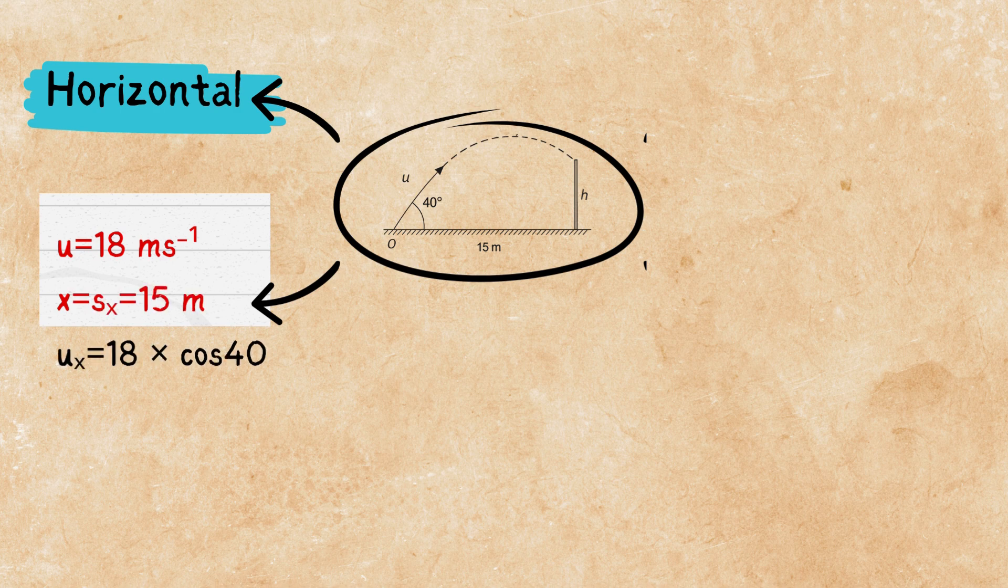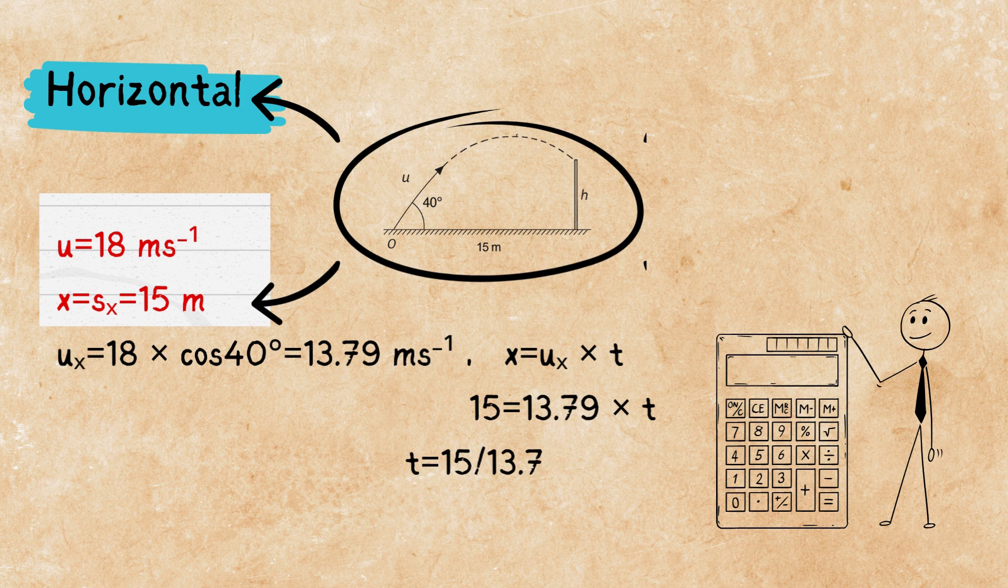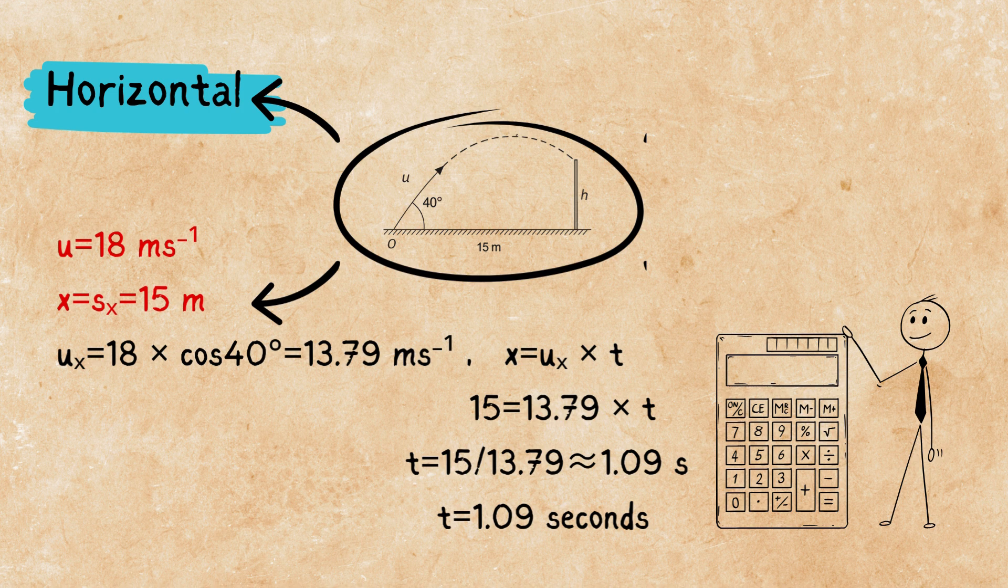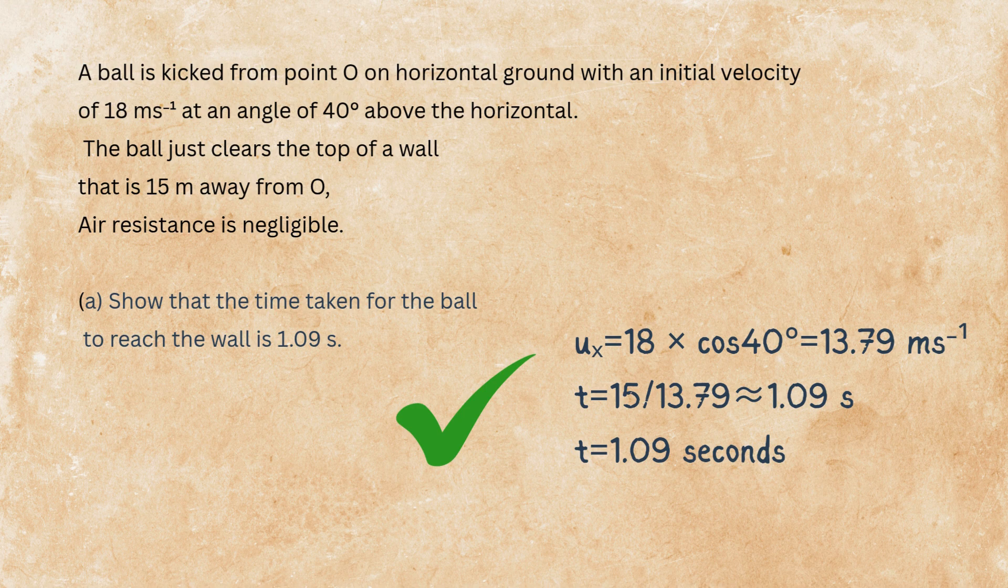Let's get back to horizontal. Our initial velocity is Ux, which is U cosine theta. With the help of calculator, it's 13.79. And we have only one formula for horizontal. X equals Ux times T. So, how much was our distance horizontally? 15 meters. The distance we have. The initial velocity in X direction we have. Easily, we can find the time. And that's how part A is done. The time is 1.09 seconds for the ball to reach the wall.